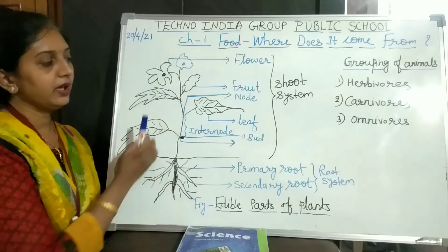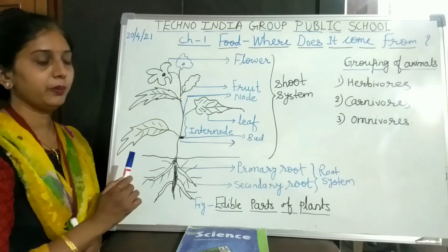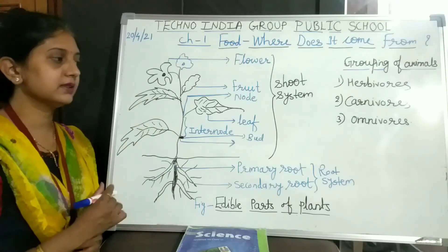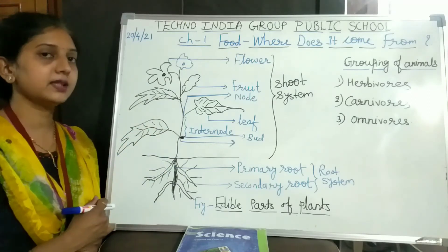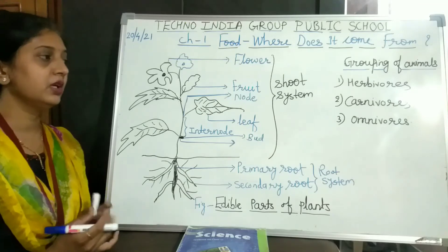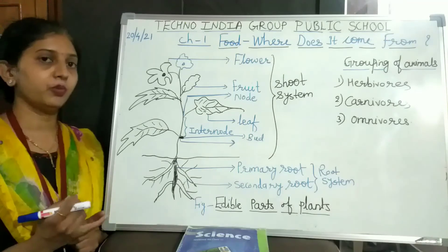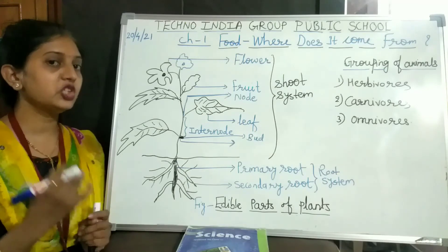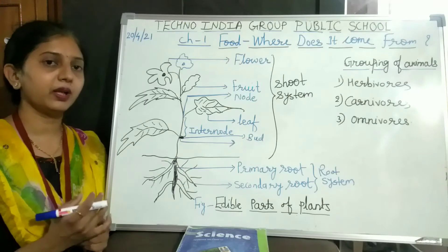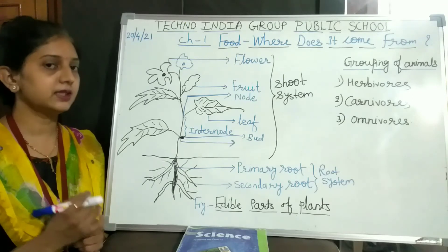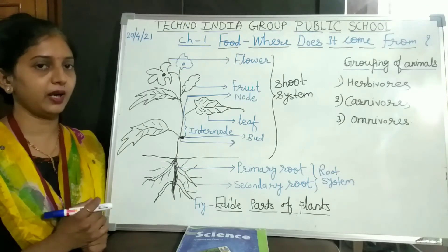Now let's look at the edible parts of the plants. How can we say these are the edible parts? For example, pomegranate is a fruit, but which part of the pomegranate do we eat? We eat the seeds of the pomegranate.